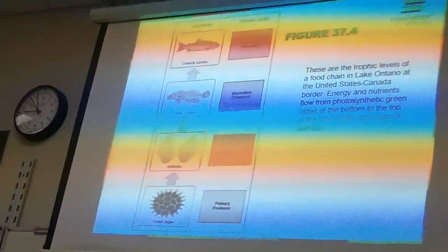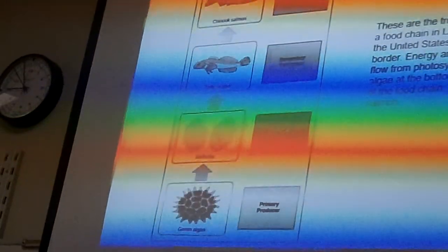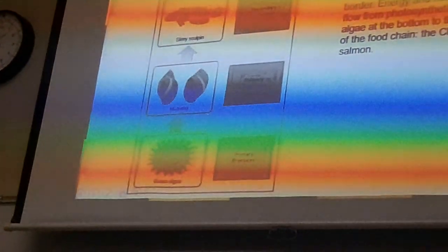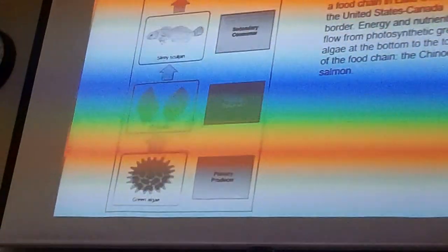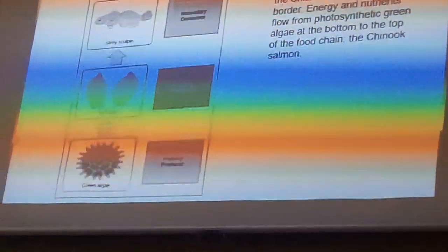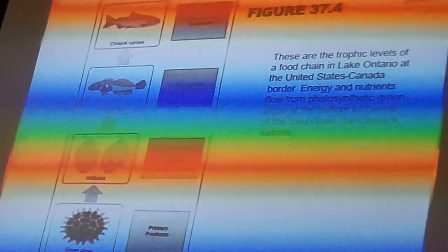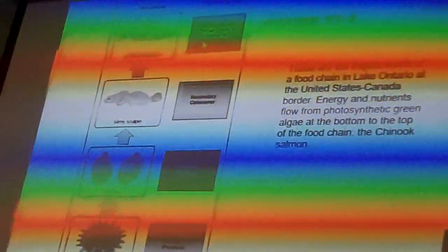And so the snails get eaten by whatever this thing is, a slimy sculpin, some kind of fish that eats the snails. So the mollusks are the primary consumer. The sculpin is the secondary consumer. Now, since it is eating an animal, we can also call it a carnivore. If something eats another animal, we call it a carnivore. What do we call something that eats plants or producers? Herbivore. So another name for a primary consumer is an herbivore. And another name for a secondary consumer is a carnivore. And this Chinook salmon that eats the sculpin, that's also a carnivore because it's eating another animal. But in this case, it's the third consumer in the chain, so it's called the tertiary consumer.